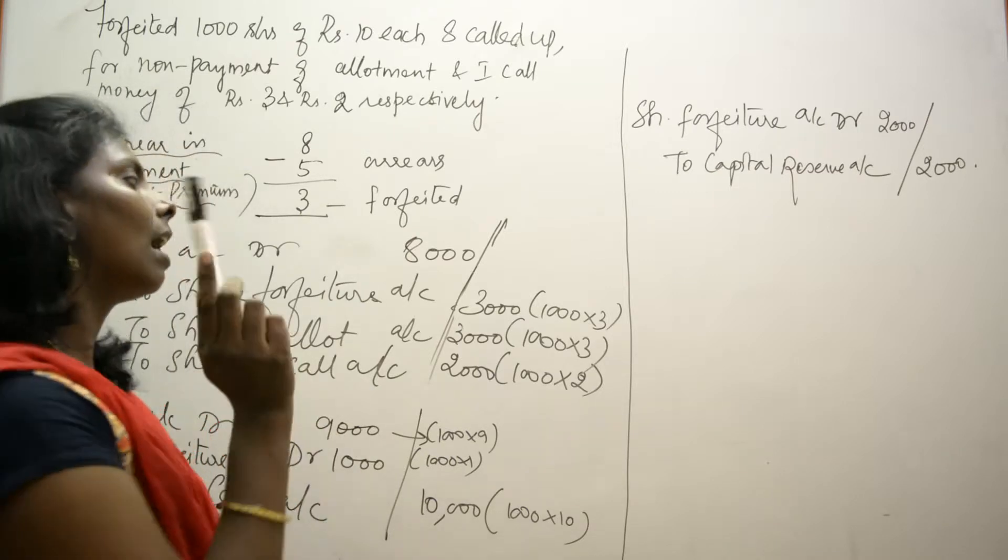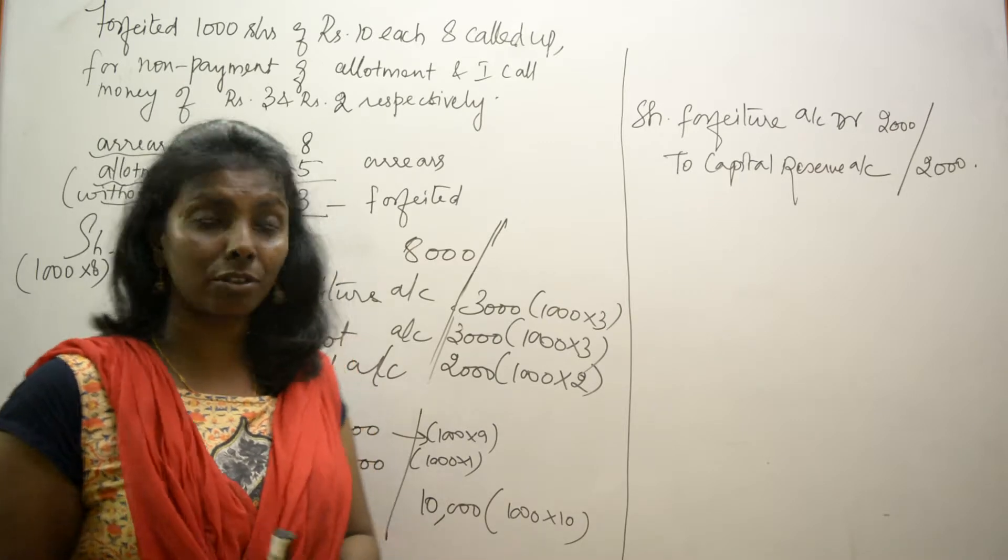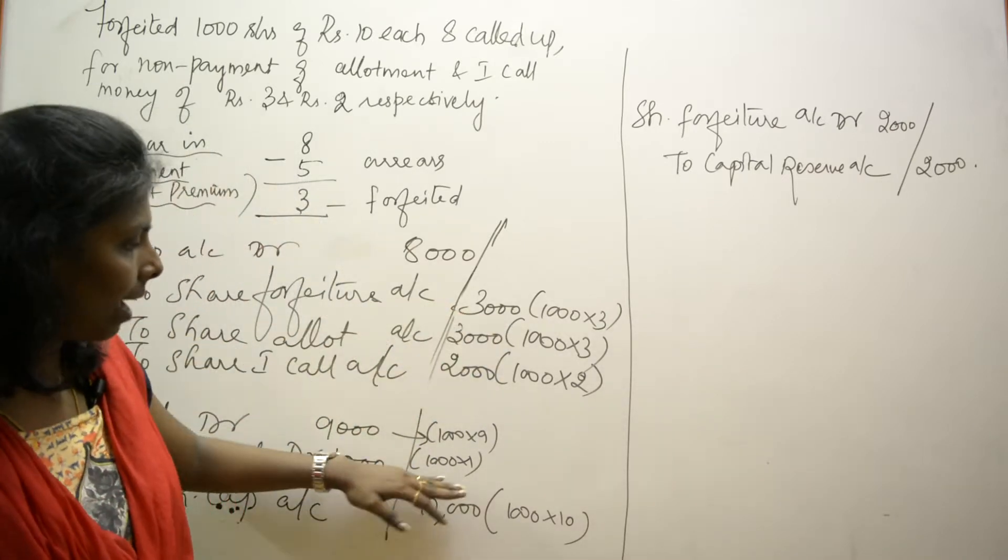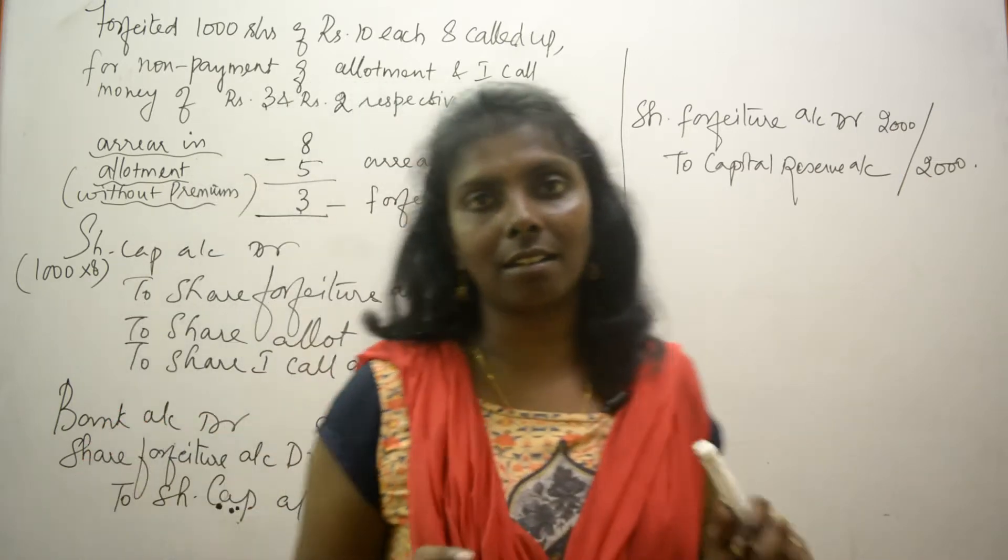So I don't need to do any calculation for capital reserve. Simply 3000 minus 1000 will give me 2000 as capital reserve. I think you are clear with this concept.